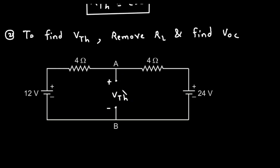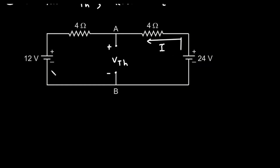Now to find VTH, first we need the value of current. As we can see, here it is 12V and here it is 24V. We are assuming the direction of current — let's say this is current I. Now we will apply KVL to this whole loop to first find the value of current I, then we will find VTH.